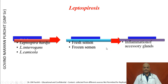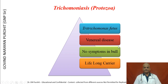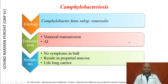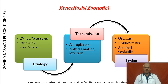Leptospirosis can result in problems in fresh or frozen semen due to inflammation of the accessory sex glands. Trichomoniasis is a venereal disease with no symptoms in the bull, which becomes a lifelong carrier. Campylobacteriosis has venereal transmission and has been controlled wherever AI is the only means of breeding, because antibiotics added to semen usually kill the Campylobacteria.